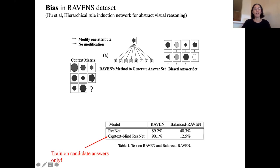In fact, when this group tried to train on the candidate answers only, totally ignoring the context matrix, they were able to do as well as the ResNet. So this was kind of a disappointment. This group created a new data set, a new way of generating these problems, but I'm not sure if it might not have its own biases.